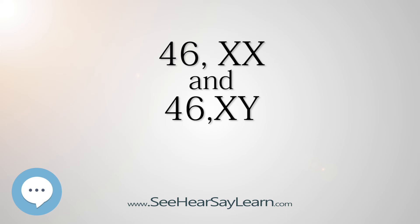Diagnosis: Diagnosing a chimera is particularly difficult due to the random distribution of 46XX and 46XY cells within the body. An organ might be made up of a mix of 46XX and 46XY, but it may also be made up entirely of one genotype only. When that is the case, no abnormalities are noted and other types of tissues need to be analyzed.